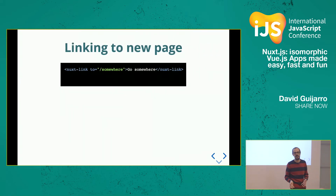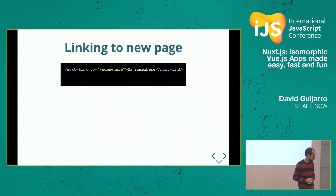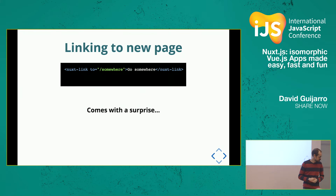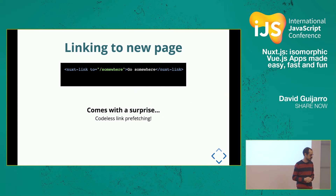Now we need to link from a previous page to the new page. We use `nuxt-link`, a component coming directly from the Nuxt package that creates a link to a new page. Nuxt-link comes with a surprise: it provides link prefetching without us needing to do anything. So when the link is in the viewport, it will be detected and the next path will be automatically preloaded by the browser.